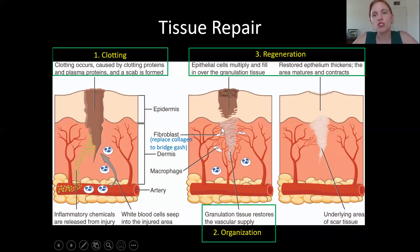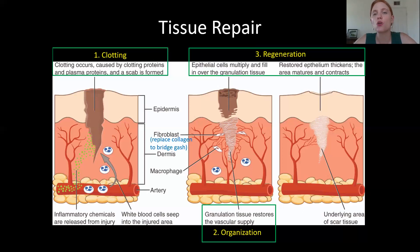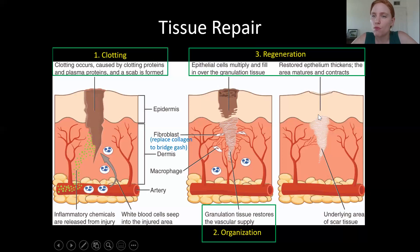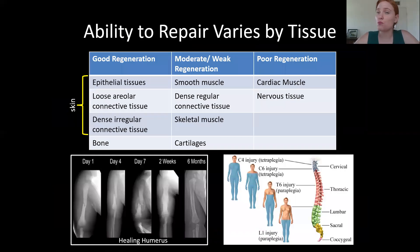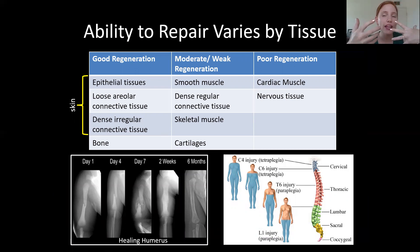After scar tissue forms with the help of fibroblasts, you have regeneration — cells undergo mitosis to make more cells and fill in the gap, ending up with more or less similar tissue to what you started with. This process of tissue repair is illustrated using the skin, partly because skin is especially good at repairing itself. Not all tissues can repair the same way — some are really good at it, some are not.